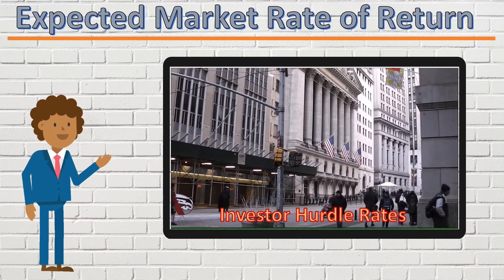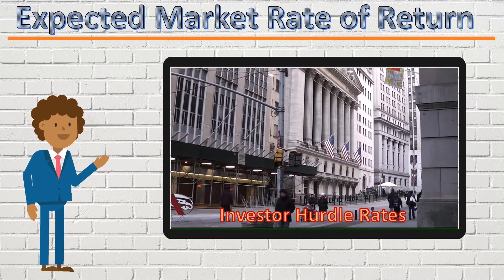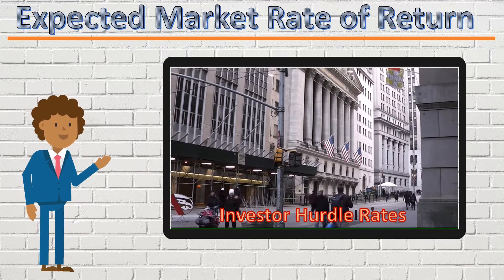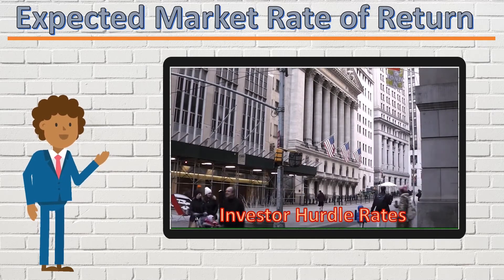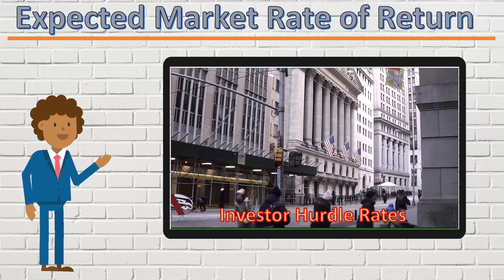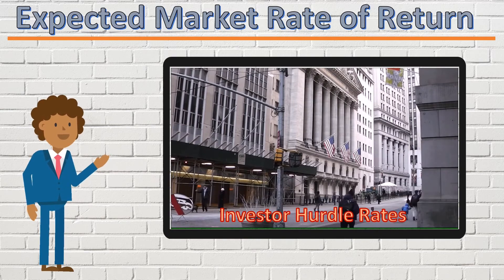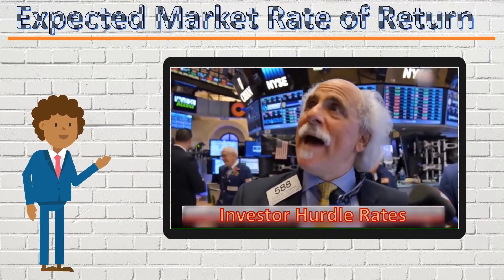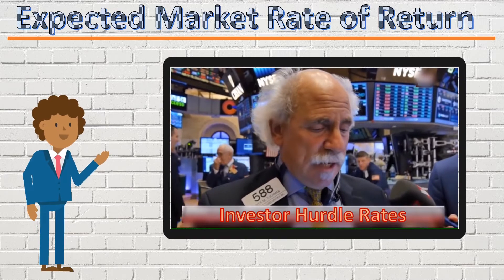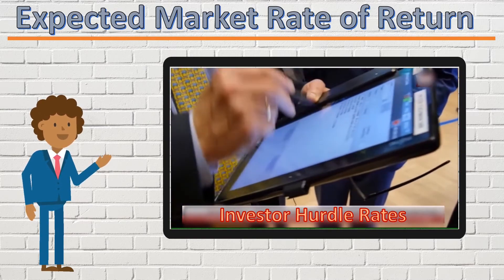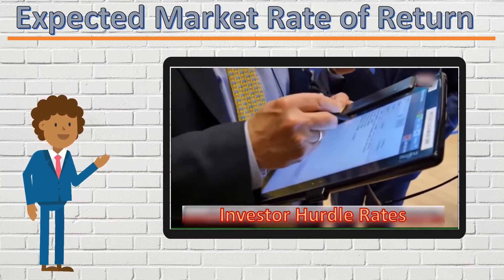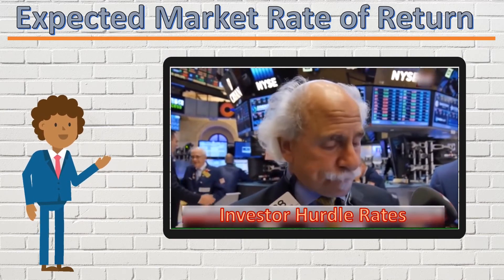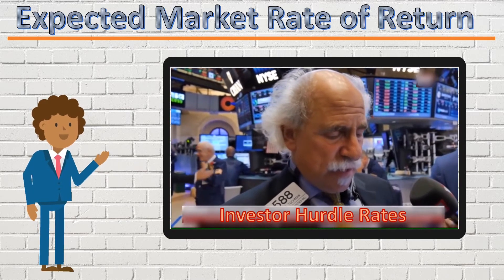Investor-specific hurdle rates are the most subjective measure, but the most influential one. Asset managers and hedge funds would have previously communicated a minimum rate of return to their investors. Their job is to place those funds in investments that would meet or exceed these minimum return thresholds. Any assets offering returns below their investment targets would not receive any capital investment. Due to the size of the asset management, pension fund, mutual fund, and hedge fund capital base, these targets play an important role in influencing the dividend yields or equity values of companies in the economy. The higher the industry-wide hurdle rates communicated by firms, the higher the expected market rate of return would be.